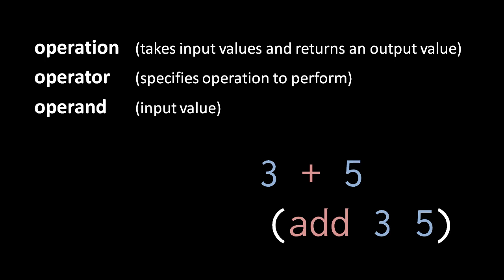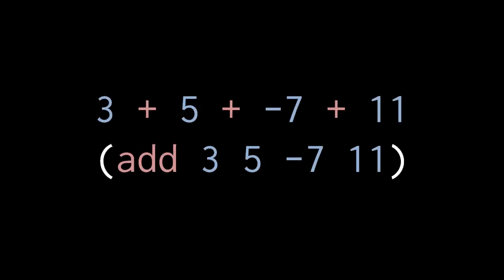Now, one advantage of prefix notation is that operators are not limited to having just two operands as they are in infix notation. So whereas in infix notation we have to write 3 plus 5 plus negative 7 plus 11 to add all those numbers together, in prefix notation we can simply write one addition operator followed by all four operands.